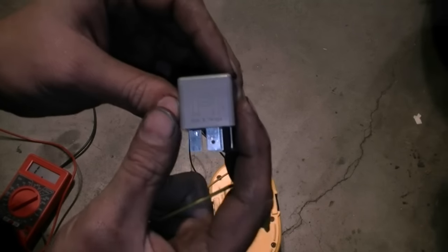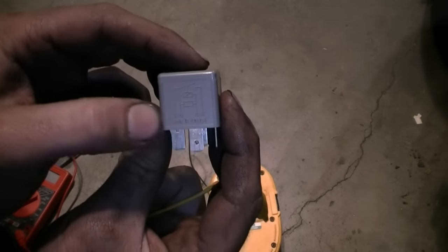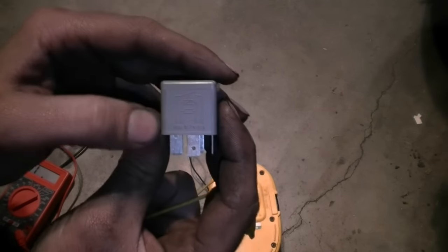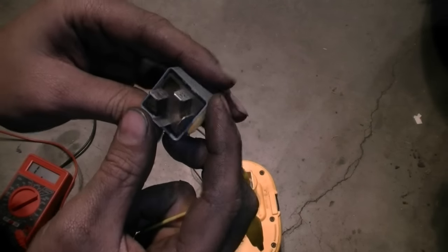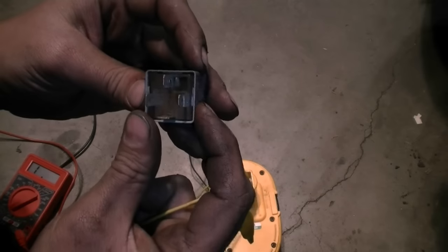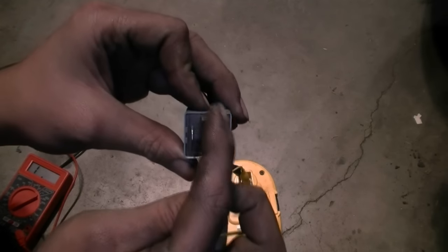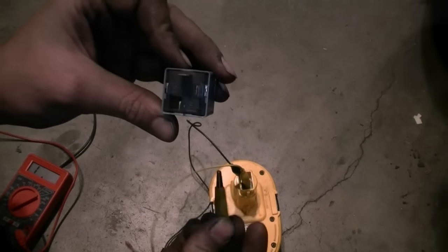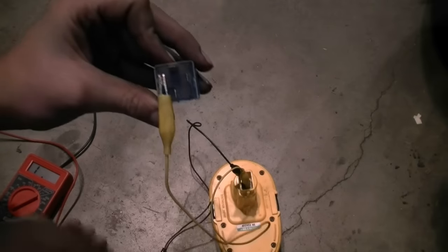This relay has the same diagram on top. We got 30, even the same numbers, they come from a Volkswagen Passat. We got 30, 86, 85 and 87. Here we got 85, 86, 30 and 87. So we're gonna do the same thing, we're gonna connect our battery to the 85 and 86 and we're gonna listen for a click.